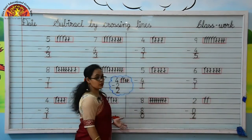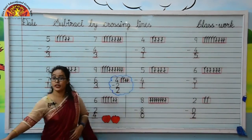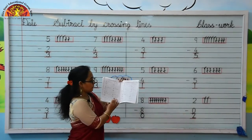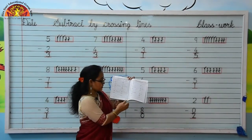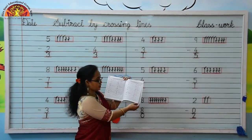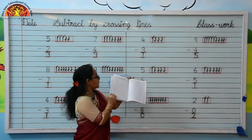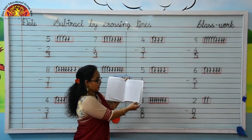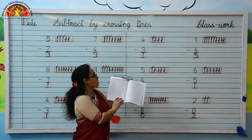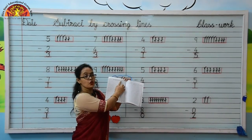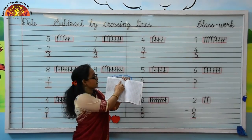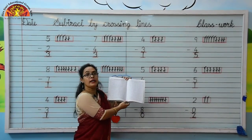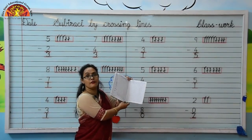Kids, do this work in your maths workbook 1, page numbers 80 and 81. Kids, on page numbers 82 and 83, forward counting from 181 to 230 is there. So you have to complete these pages also. Thank you. Have a nice day.